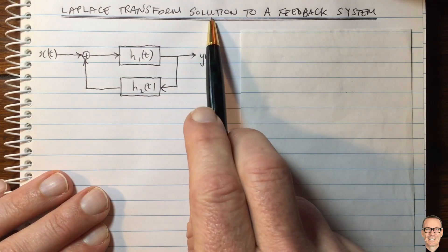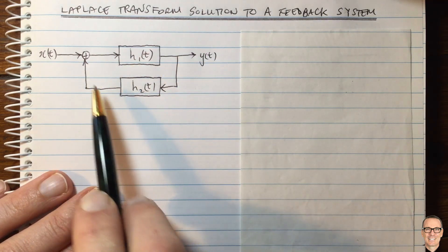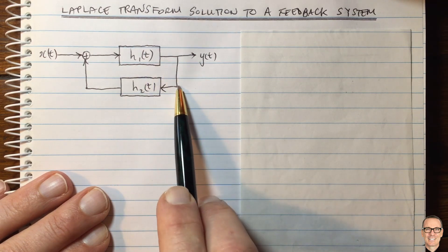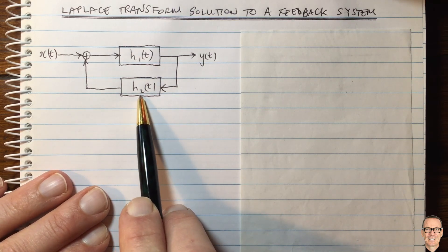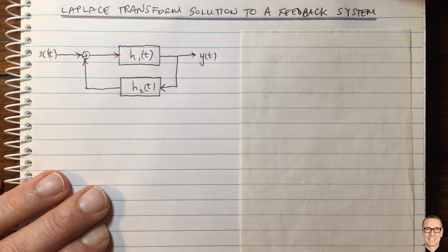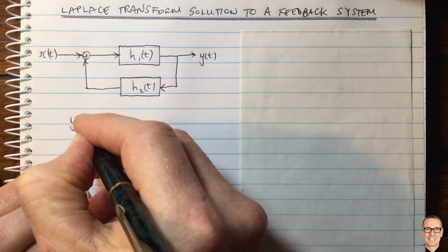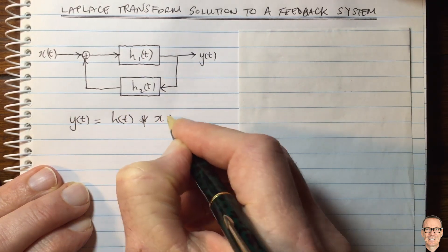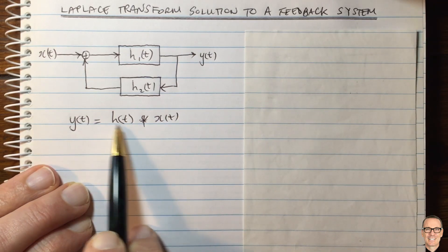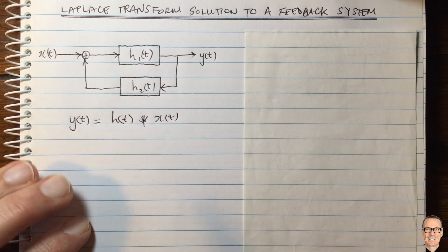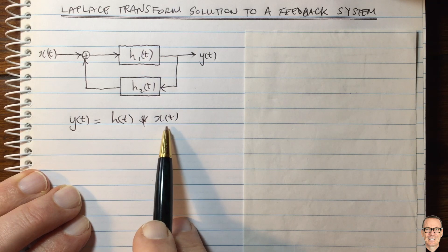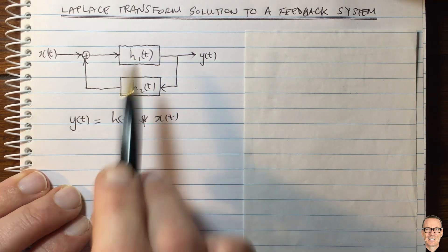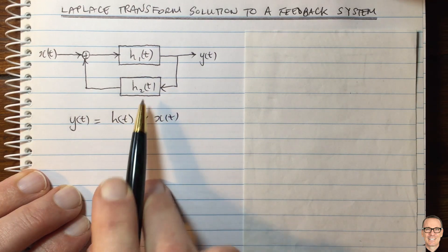Let's take a look at a Laplace transform solution to a feedback system. Here we have a feedback system where a signal comes in, goes through a linear filter with impulse response H1 of T, and then the output gets fed back through a second filter with impulse response H2 of T. We'd like to know what the overall impulse response is of this system, where Y(T) equals a convolution of the overall impulse response H(T) with the input X(T). Calculating H(T) from H1 and H2 is complicated, because convolution involves time reversal and integration, making it difficult to handle in the time domain with this feedback system.